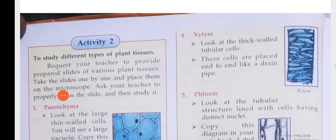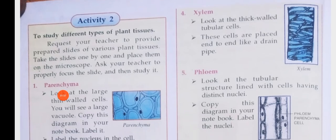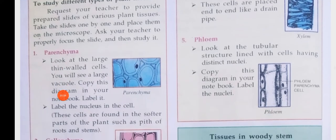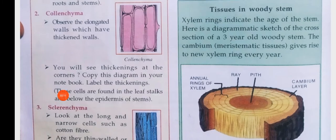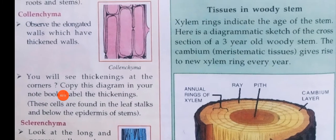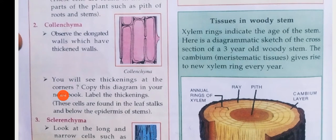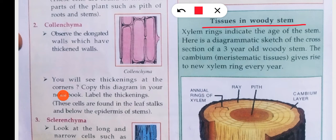Now if we look at xylem, you will see thick-walled and tubular cells with a tabular structure, lined with cells having distinct nuclei. Now the most important thing is the activity on tissues in woody stem. The xylem rings are shown in any stem, and from the xylem rings you can tell a tree's age.